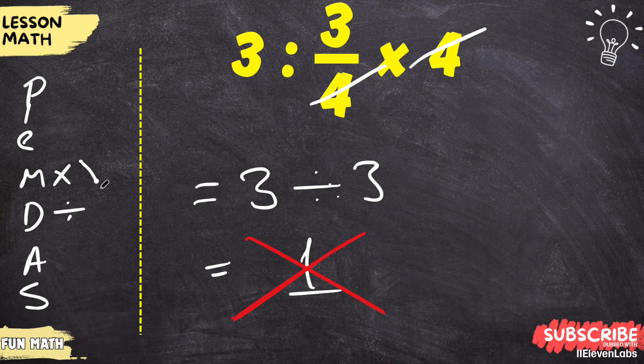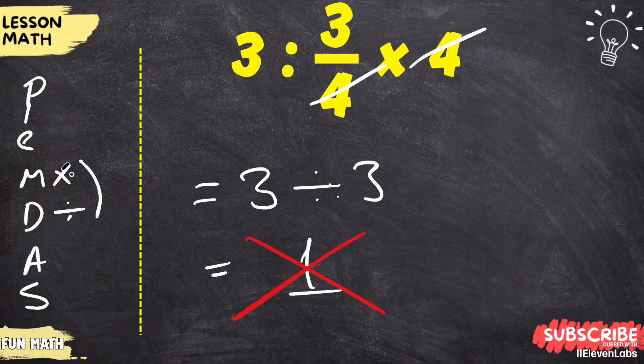In questions with multiplication and division, there was no specific order among them. You would start from the very beginning, that is from left to right. Let's solve our question again according to this rule.